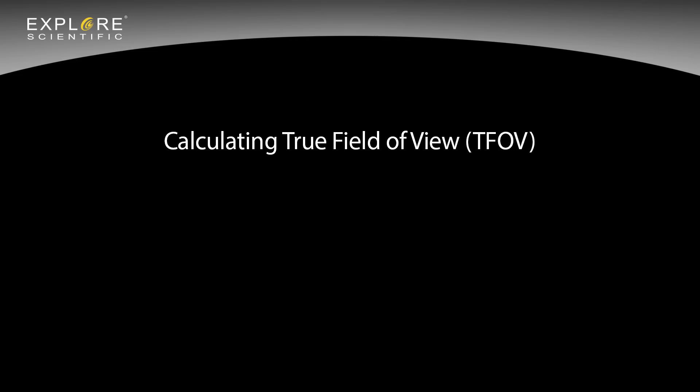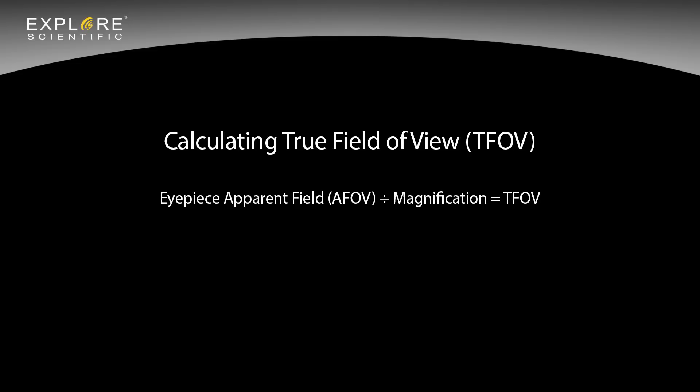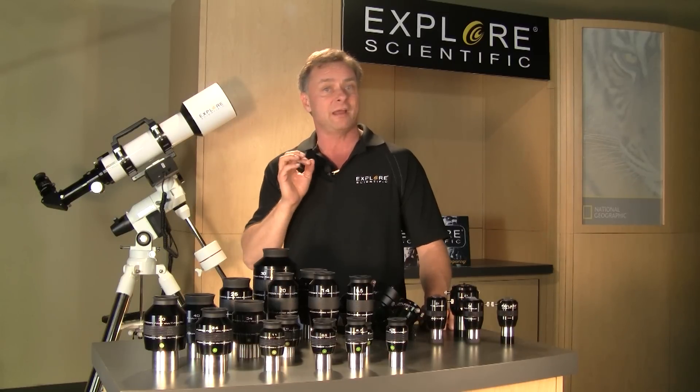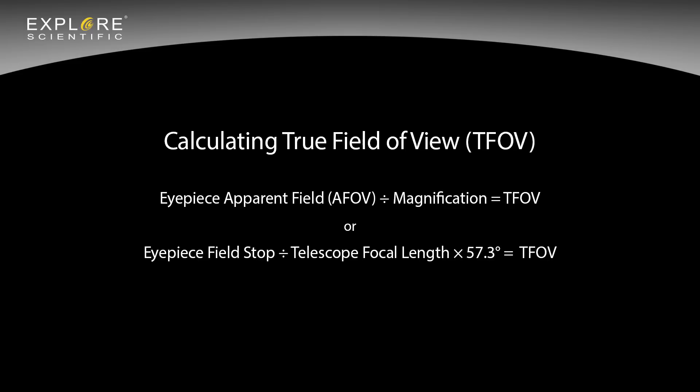So how do you calculate true field of view? Take the eyepiece apparent field of view and divide it by magnification — that equals true field of view in degrees. Another way is to take the eyepiece field stop diameter (available from the manufacturer), divide it by the telescope focal length in millimeters, and multiply by 57.3 — that also gives you true field of view in degrees.